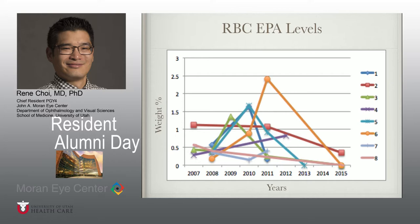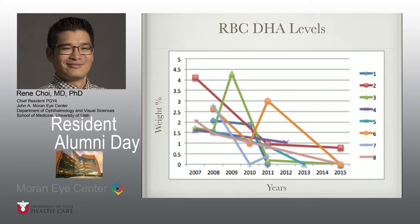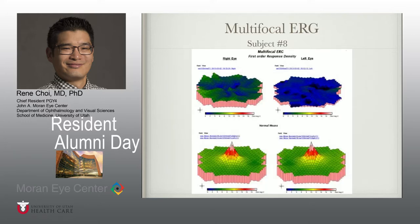Our serum markers for fish oil ingestion were highly variable. Here are the results of the red blood cell EPA levels over time, and the red blood cell DHA levels over time. These results are consistent with the lack of compliance in the majority of patients. All patients showed varying levels of an attenuated response in the macula of both eyes at the beginning of the study as measured by multifocal ERG.